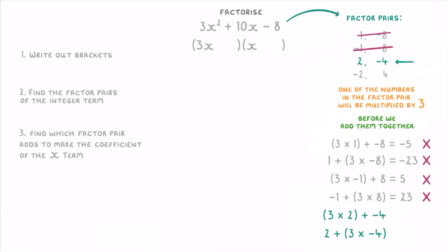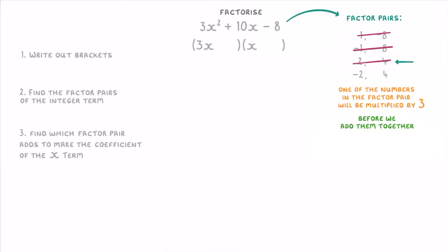For 2 and −4, we get 2 and −10 — almost right but we need a positive 10, not negative, so that doesn't work either. That means it must be the last pair: −2 and 4. Trying −2×3 + 4 = −2, which isn't right, but −2 + 4×3 = 10 — that's the combination we want. So we put the 4 in the bracket with 3x so it gets multiplied by the 3x term, and the −2 goes in the other bracket.